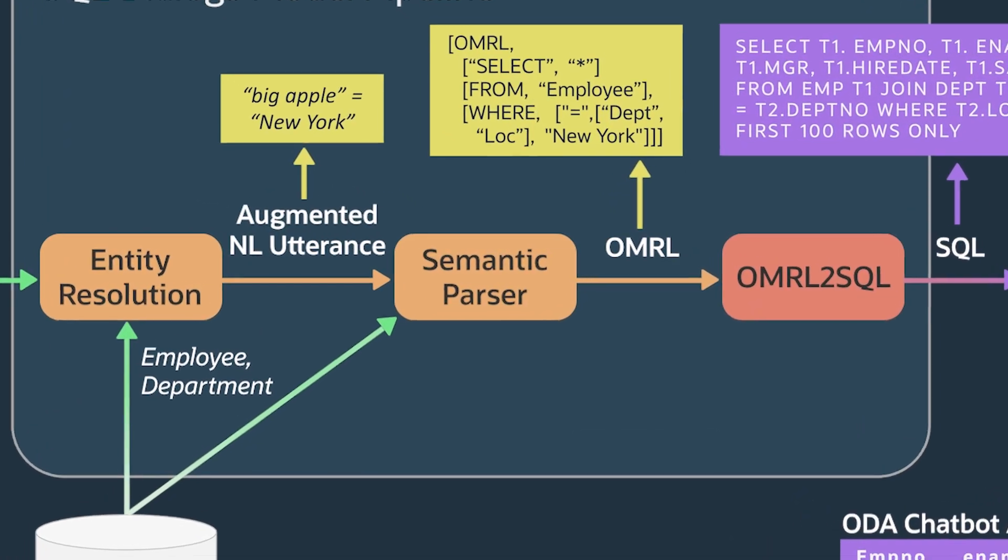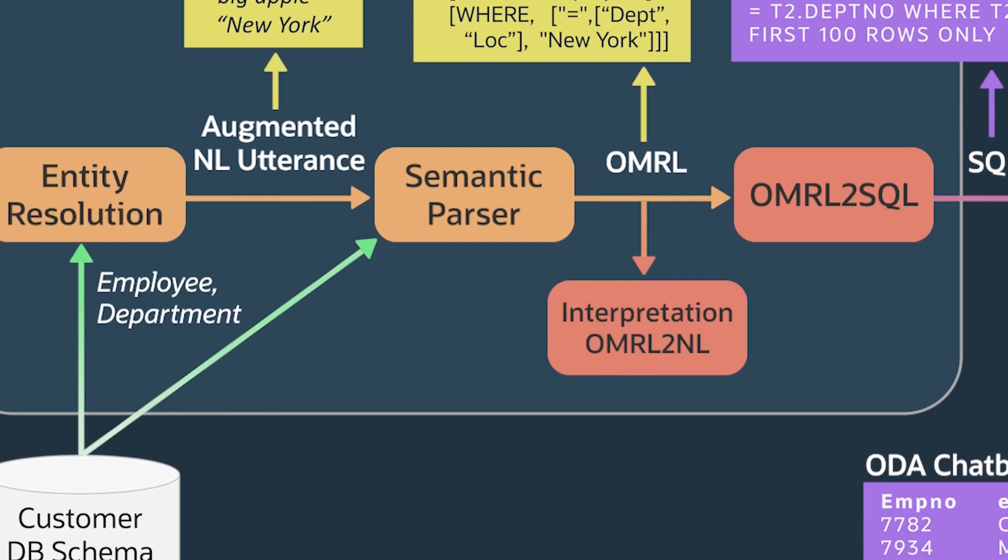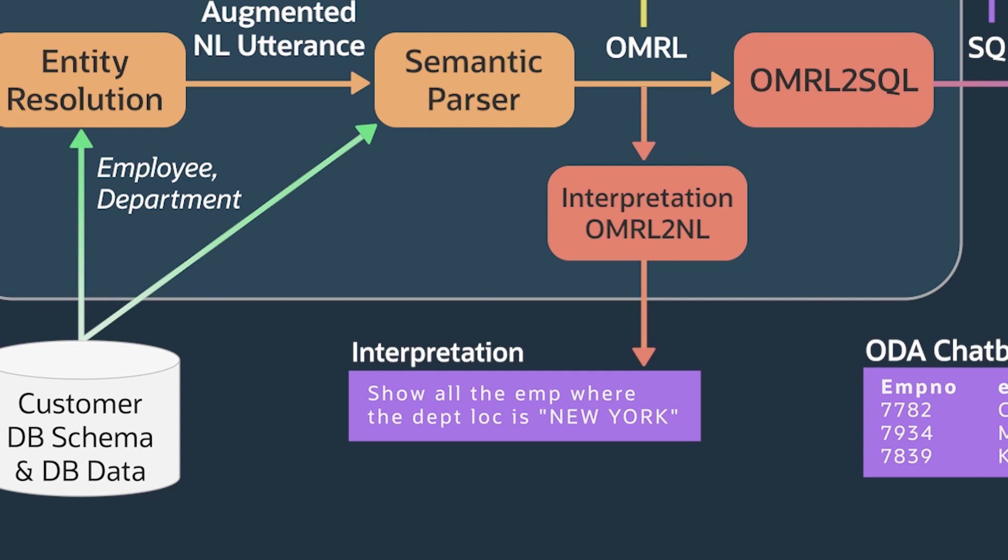As a safety mechanism, we have the interpretation component that re-expresses the OMRL back in a natural language form. While this is primarily intended to let the user recognize situations where the parser has misunderstood the user's request, it also lets the user detect situations where the parser has produced output not present in the original request. Any hallucinations would be easily detectable at that stage as well.